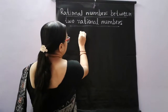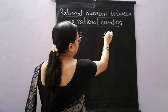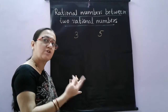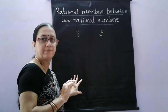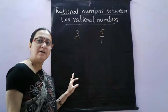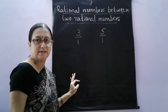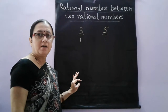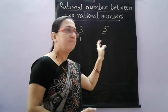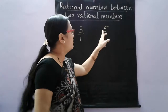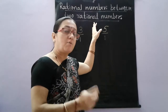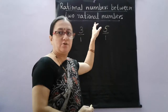Now here I want to find rational numbers between 3 and 5. Both 3 and 5 are whole numbers, natural numbers, and integers. I am converting them into rational numbers by writing 1 in the denominator — that is, in P by Q form. If I want to find three rational numbers between these two, as you know there is only one number in the middle, which is 4. So how can we find three rational numbers now?